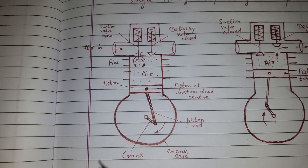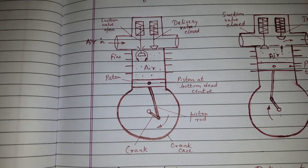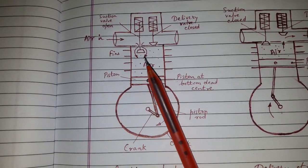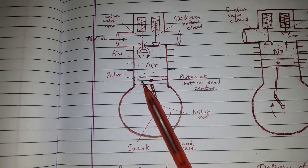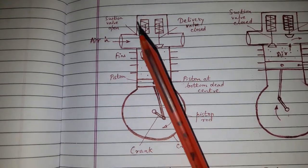Regarding the construction, single acting reciprocating air compressor uses four bar mechanism - that is cylinder, piston, piston rod, and crank. There are two valves which are spring operated.